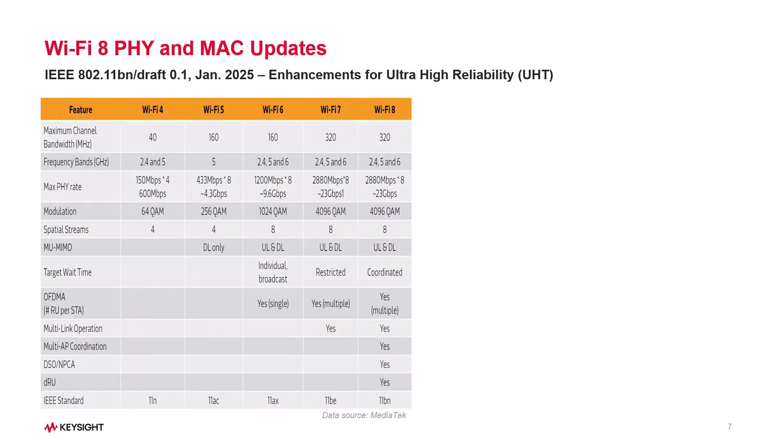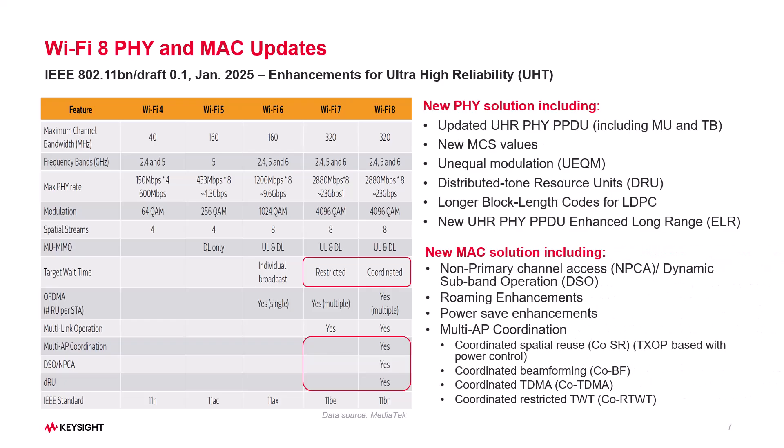Wi-Fi 8 builds on Wi-Fi 7 but goes beyond just speed. Here's what's new: first, new MCS values for better rate adaptation; second, unequal modulation (UECOM) for more efficient MIMO; third, non-primary channel access for dynamic switching; fourth, distributed resource units (DRU) for more range and power efficiency; fifth, longer LDPC codes for stronger error correction; and sixth, multiple AP coordination to boost network efficiency.